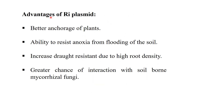Advantages of the Ri plasmid include better anchorage of plants, since the site of replication is mainly the roots. It also confers ability to resist anoxia from flooding of the soil, increased drought resistance due to high root density, and a greater chance of interaction with soil-borne mycorrhizal fungi.